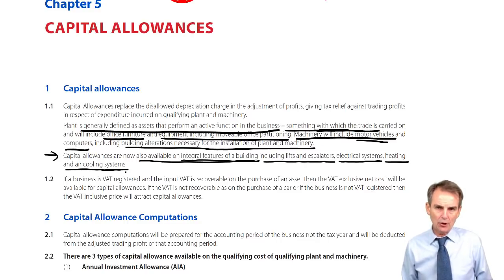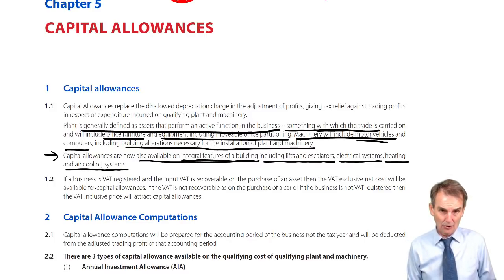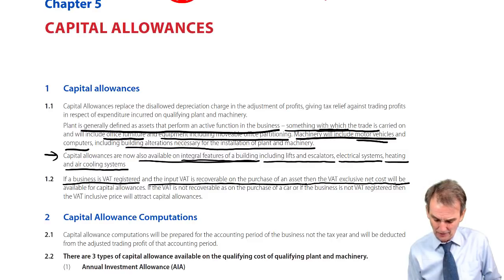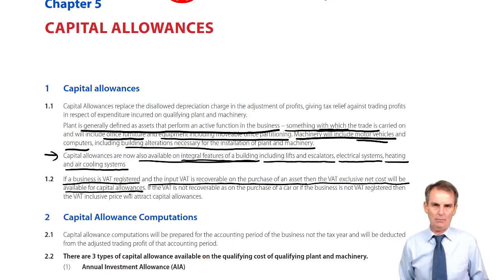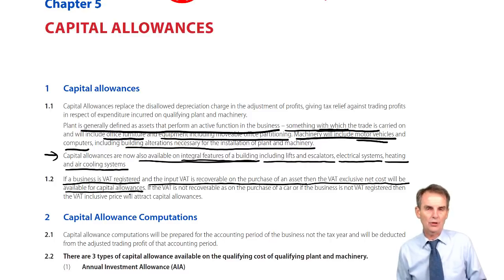Having established what plant and machinery qualifies, we need to know on what cost you will be able to claim that capital allowance. This comes down to whether the business is or is not VAT registered. If the business is VAT registered and the input VAT is recoverable on the purchase of the asset — the usual situation — then the VAT-exclusive net cost will be available for capital allowances. For example, a VAT-registered business purchases an item of plant for a net cost of £10,000 exclusive of VAT.